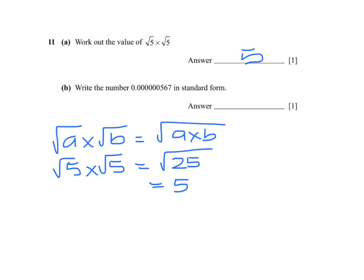With a small number in standard form, if we count the number of zeros: 1, 2, 3, 4, 5, 6, 7, that tells me that I want times 10 to the power of minus 7. And we want 5.67.